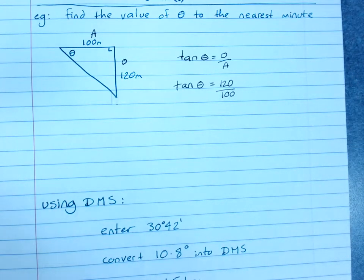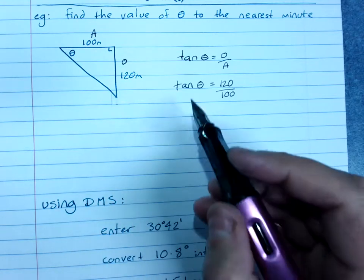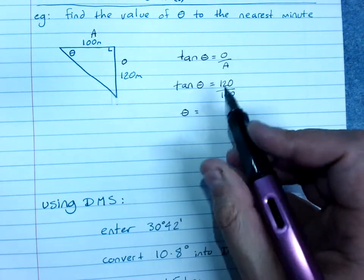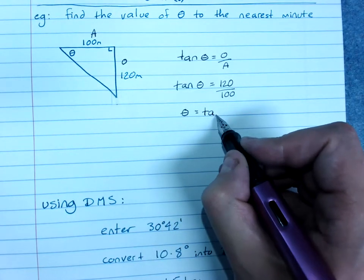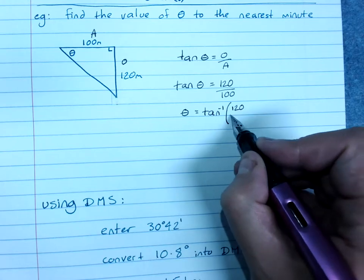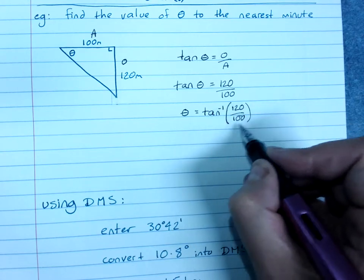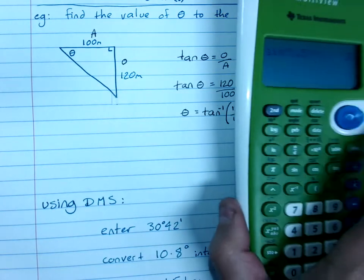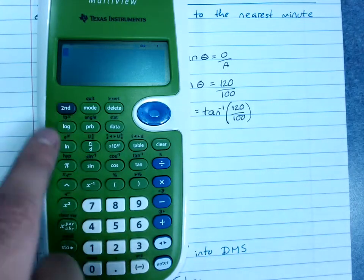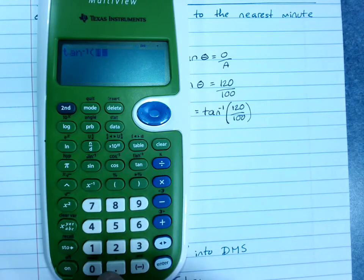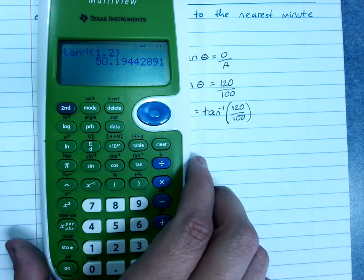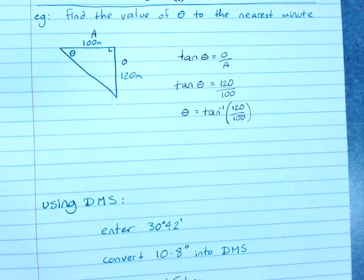And now I have tan of the angle and I want to find just the angle. So we take inverse tan of both sides. I'll be left with the angle, and I will find inverse tan of 120 over 100. I could have simplified that down to 1.2 if I wanted. So inverse tan of 1.2, I've got 50.19 degrees.